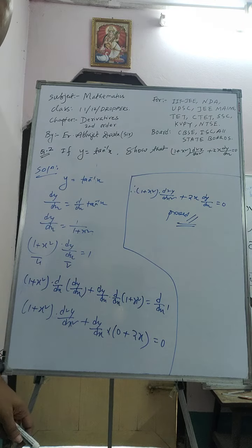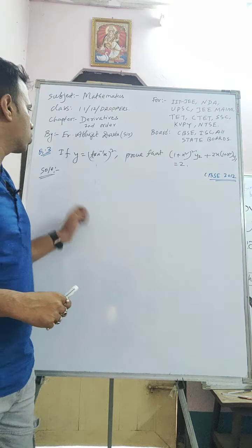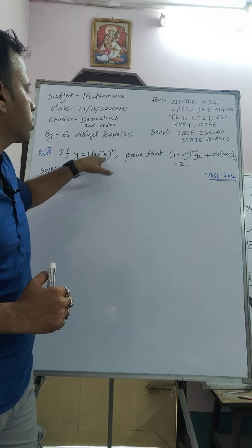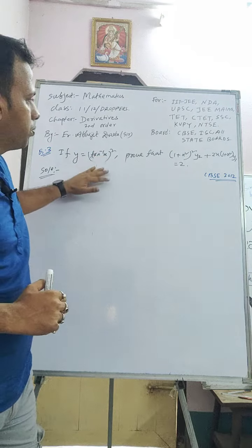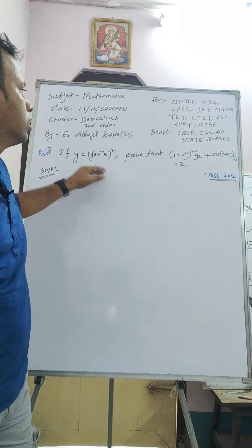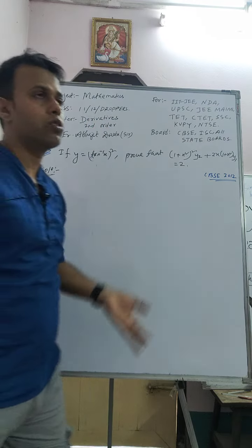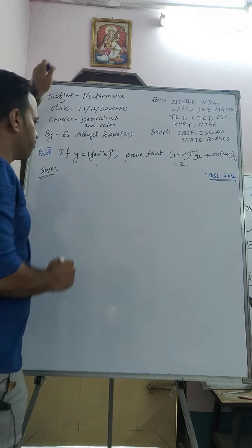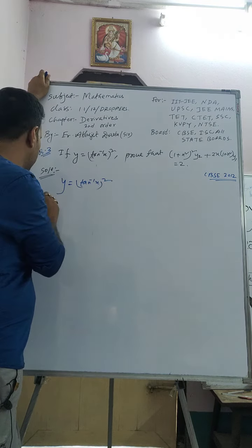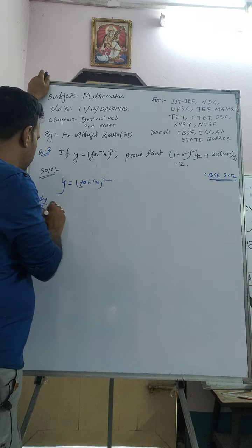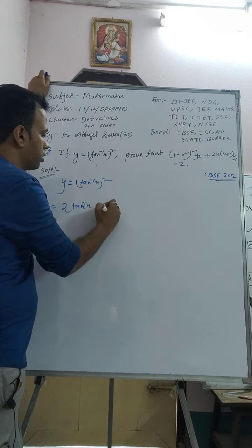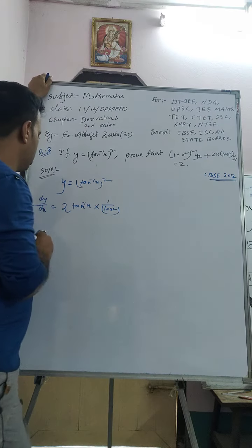The next question: if y = (tan⁻¹x)², prove the corresponding second order derivative identity. When y is something squared, the method is slightly different. Given y = (tan⁻¹x)², differentiate with respect to x: dy/dx = 2·tan⁻¹(x)·(1/(1 + x²)).